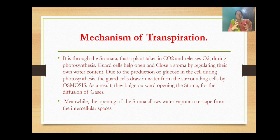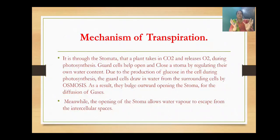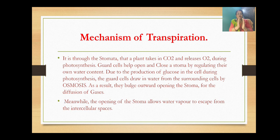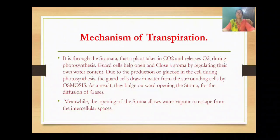Opening the stoma means that, since the shape of the guard cell is bean-shaped, the pressure created inside the cell acts in the opposite direction. Both guard cells are placed facing each other so the opening is created in the center — that is the stoma. There are numerous pores present in the leaves. The opening of the stoma allows water vapor to escape from the intercellular spaces.